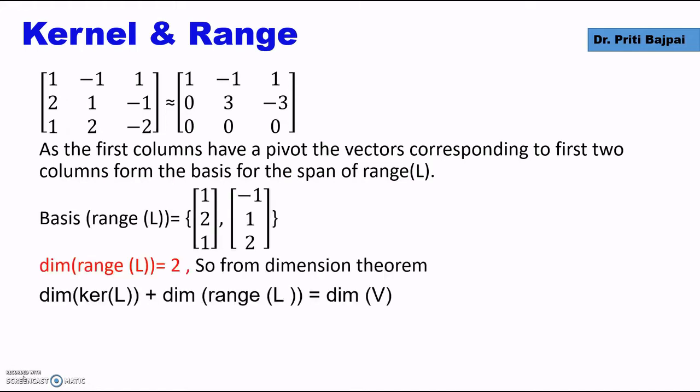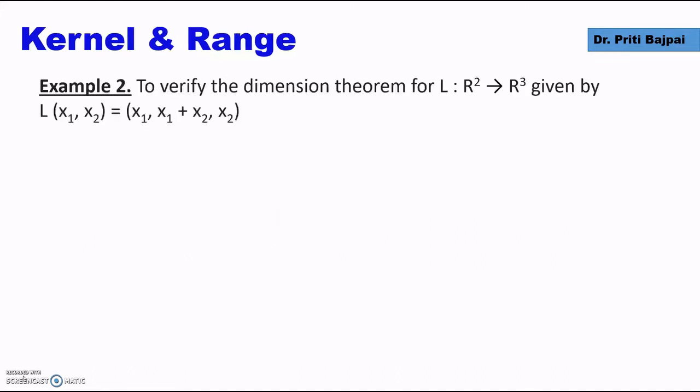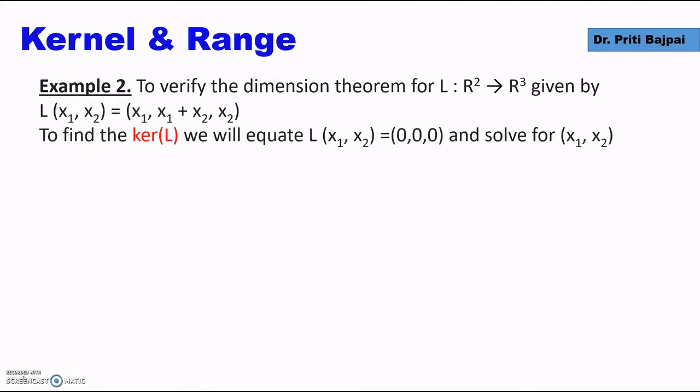From the dimension theorem, if we write the dimension of the kernel which is 1 and add the dimension of the range which is 2, we get 3. And 3 is the dimension of R³. So the dimension theorem is proved. Let's take another example.